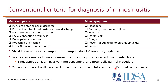From the IDSA guidelines for rhinosinusitis, diagnosis requires a patient to have at least two major criteria, or one major plus two or more minor symptoms. Gram stain and culture from sinus puncture is not routinely done because it is invasive, time-consuming, and painful. Importantly, these criteria do not distinguish between bacterial and viral infection, so that also needs to be determined.